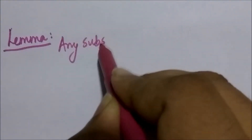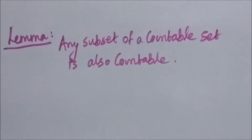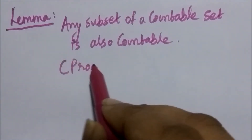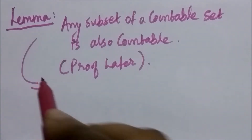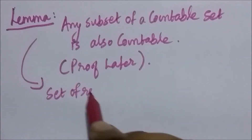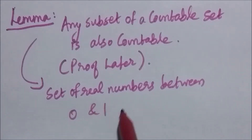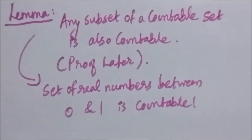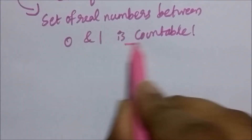Look at the lemma which states that any subset of a countable set is also countable. We are not going to prove this lemma in this video — we will just assume it for our required proof. So if the set of real numbers is a countable set, then any subset of it is also countable. Therefore the set of real numbers between 0 and 1 is going to be a countable set.